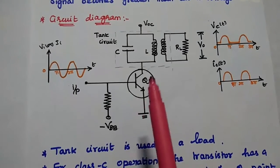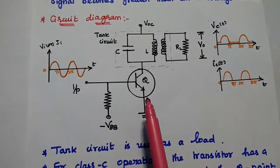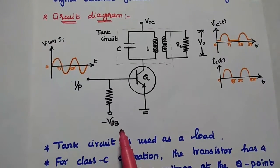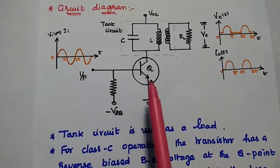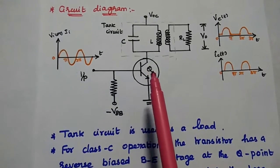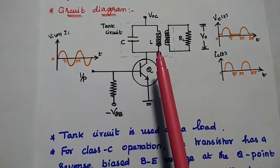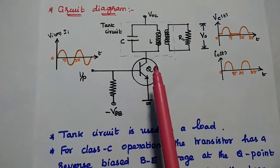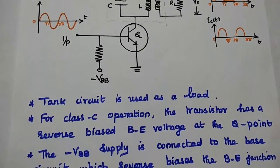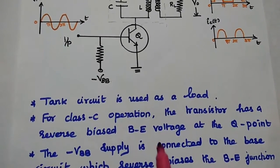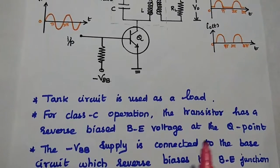Here we are going to ensure that the base-emitter junction is always reverse biased. For that we give the minus VBB supply to this transistor. This is an important condition — the base-emitter junction is reverse biased. Then we can get the collector output, and that has to be filtered using this LC circuit. The tank circuit is used as a load in this class C amplifier. For class C operation, the transistor has a reverse biased base-emitter voltage at the Q point.